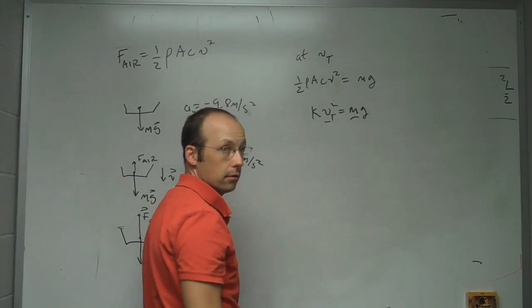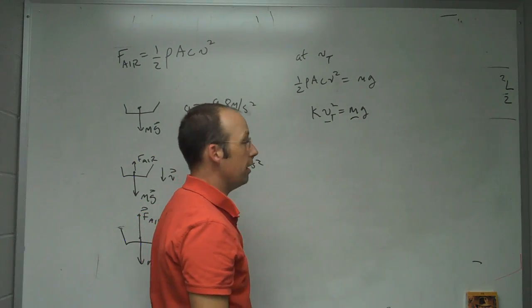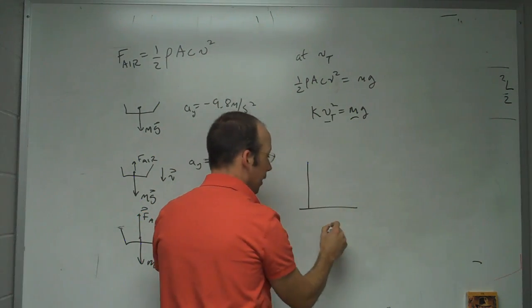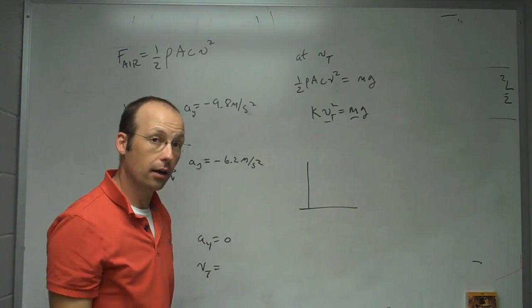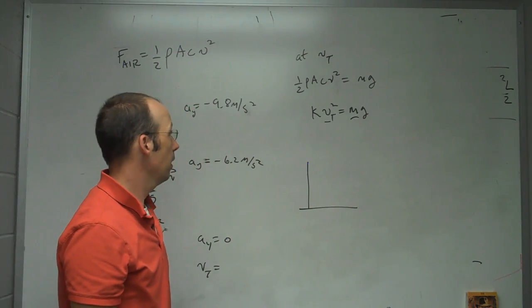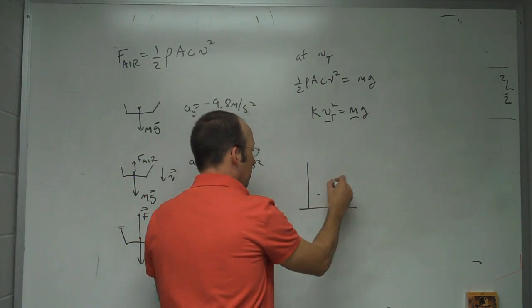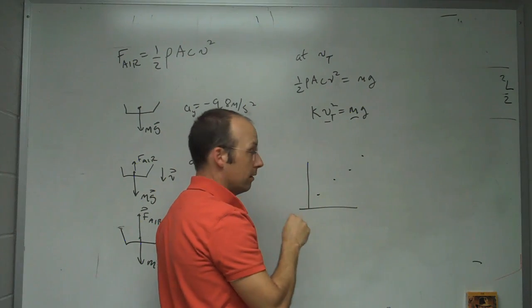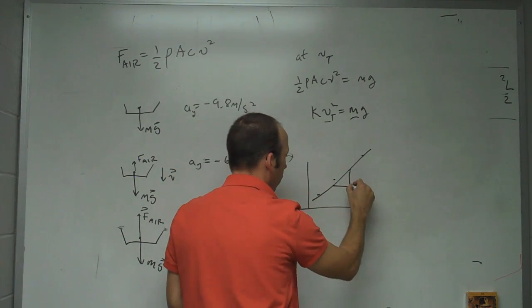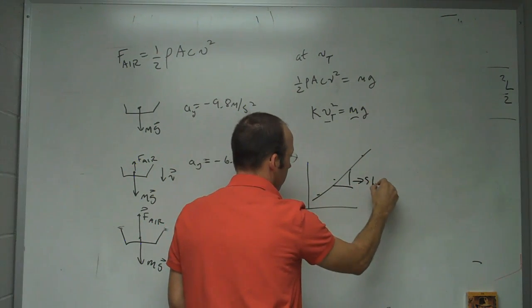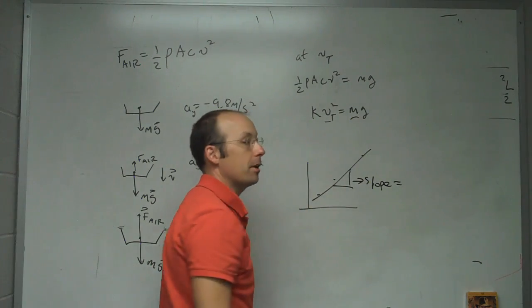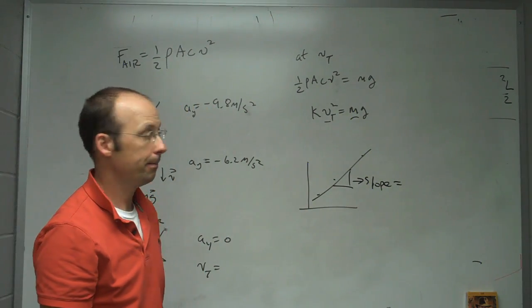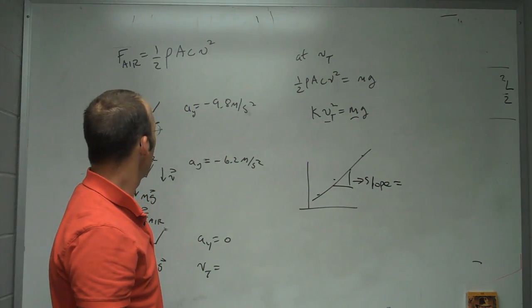And by looking at how those change, I can make a graph of something versus something. I'm not going to tell you what, I'll let you think about that. But from that graph, make it such that it's a straight line, and from that slope make something meaningful from that.